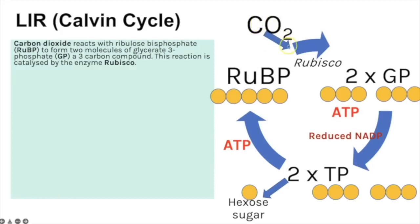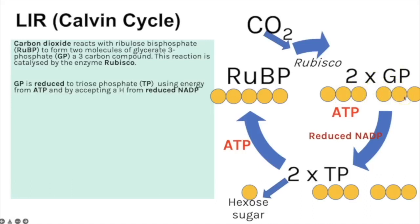Let's go through the cycle. Carbon dioxide reacts with RuBP, a five-carbon compound — shown here as yellow circles representing carbon molecules. The five-carbon RuBP combines with one-carbon CO₂ to give a six-carbon compound, but that's unstable, so it splits into two three-carbon compounds: GP. So we have two molecules of GP.